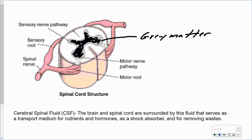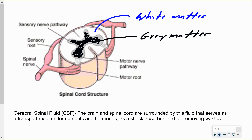In the brain, the gray matter is on the outside, in what's called the cerebral cortex. With the spinal cord it is reversed — the gray matter is on the inside. Around the outside of the spinal cord is the white matter, which is another reversal compared to the brain. Keep in mind: without a myelin sheath, there is no ability to repair and regenerate, so damage to the gray matter of the brain or spinal cord is permanent.